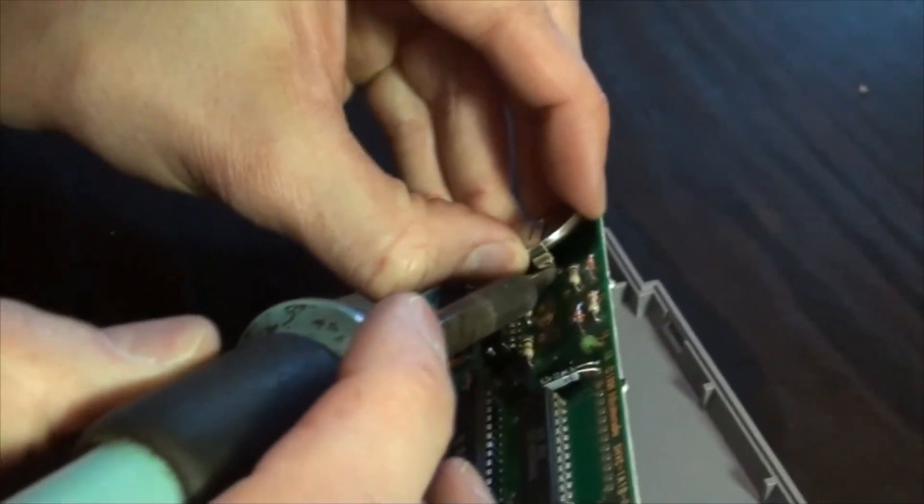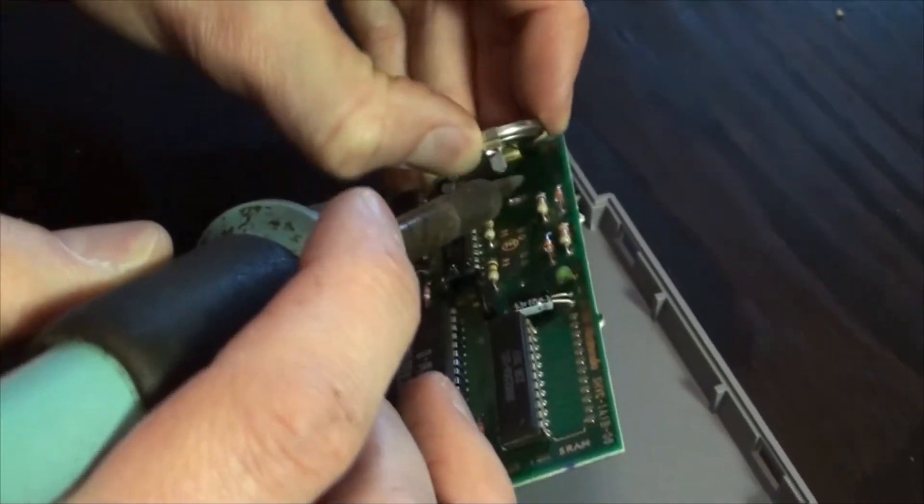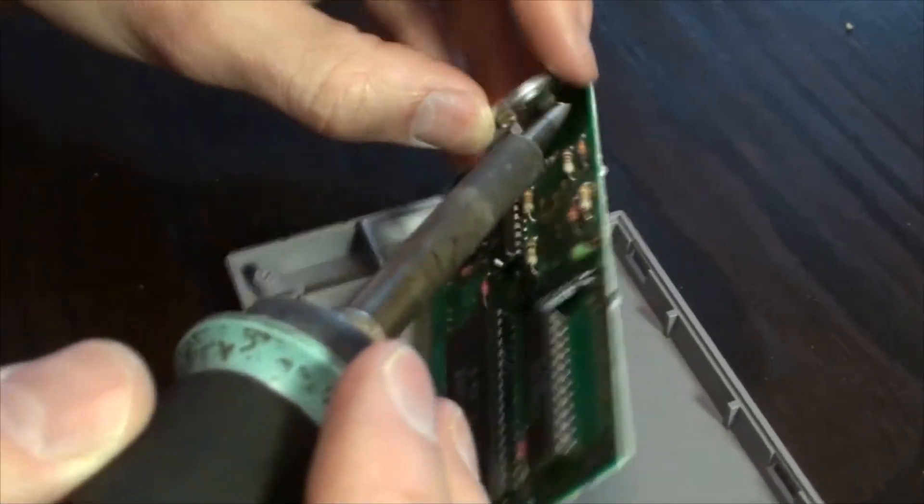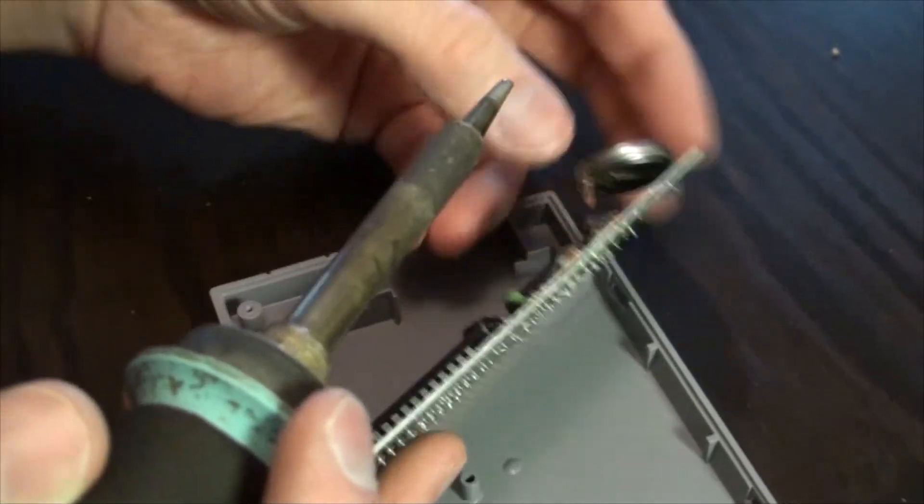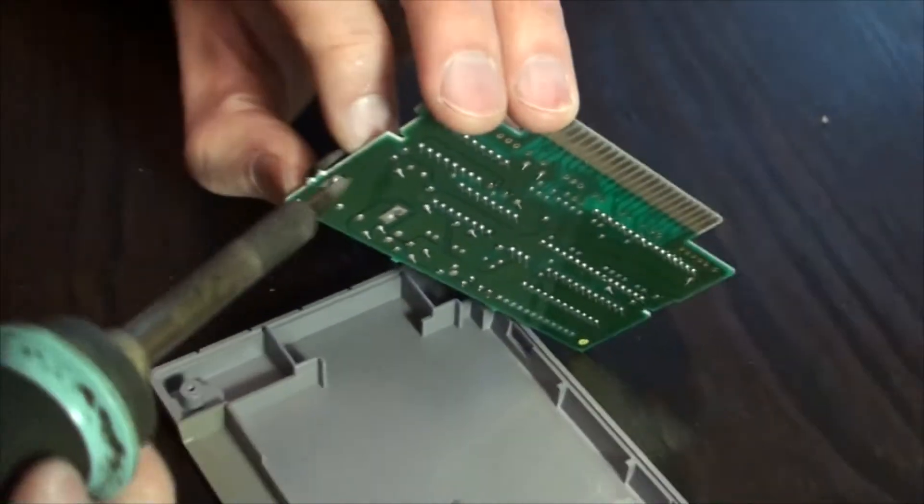It may even be a good idea to write with a marker on the PCB which is positive and negative as a reminder. Using a soldering iron, remove the old battery.